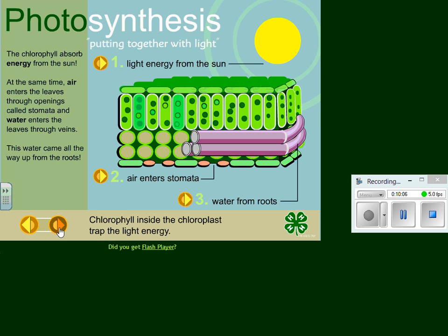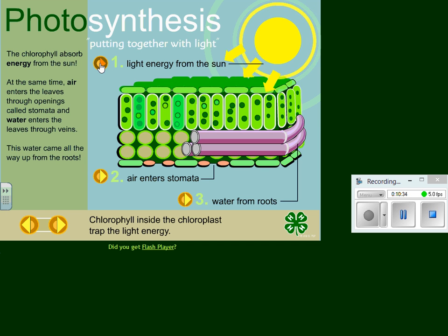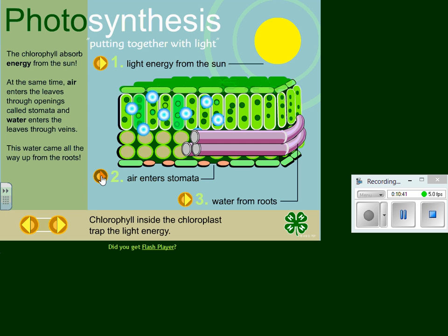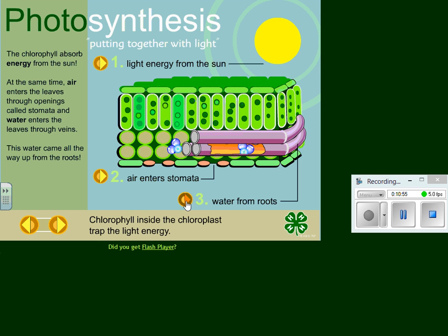The chlorophyll absorbs energy from the sun. At the same time, air enters the leaves through openings, and water enters the leaves all the way up from the roots. In step one, light energy comes in from the sun, air enters through the stomata capturing carbon dioxide, and water comes up through the roots. That's where the transformation happens.